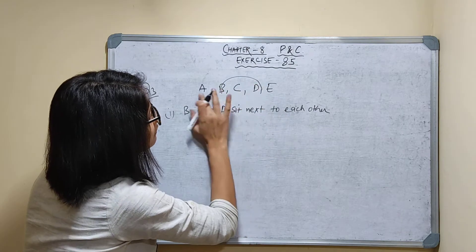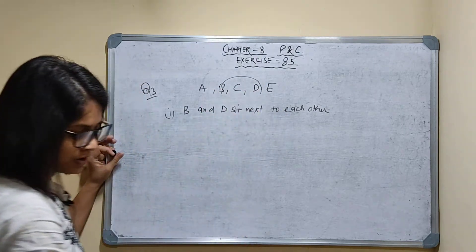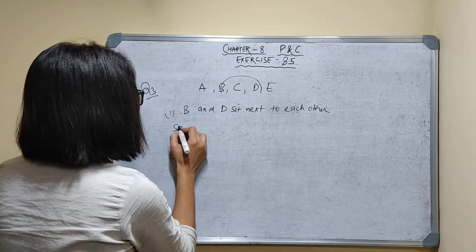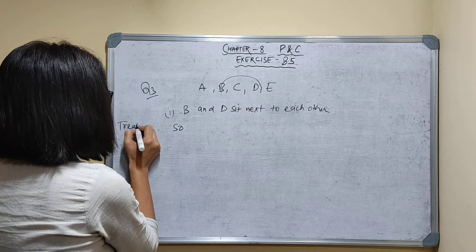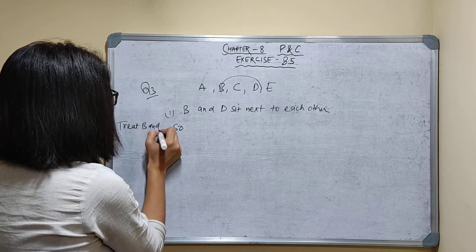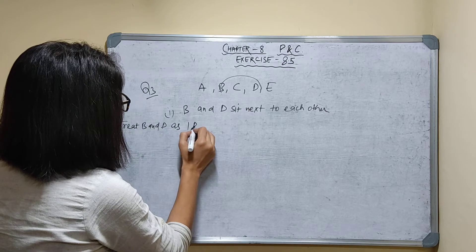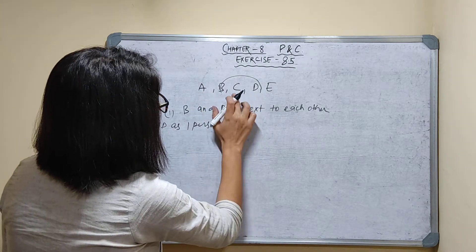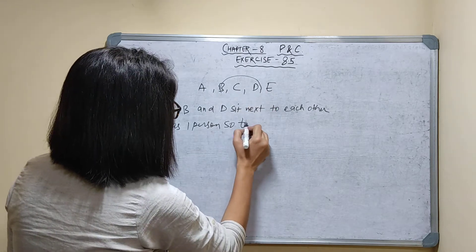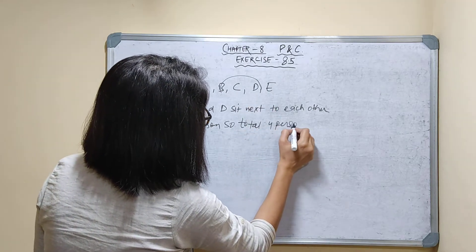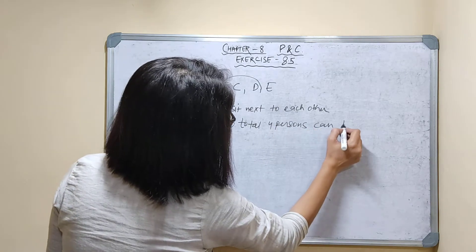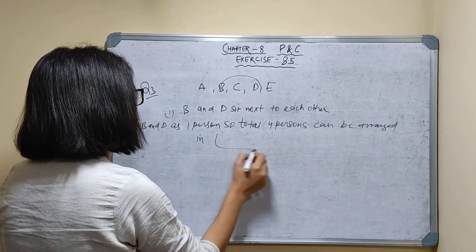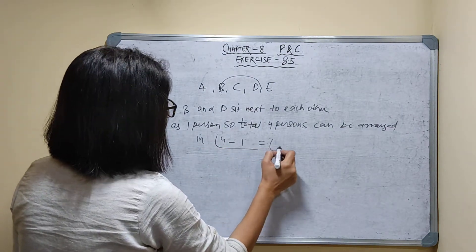So we have 1, 2, 3 and this B and D — that is 4 persons total, treating B and D as 1. These 4 persons can be arranged in factorial of 4 minus 1, that is factorial of 3 ways.